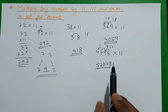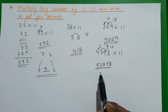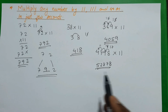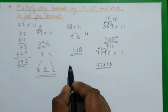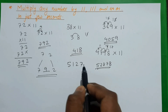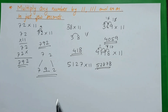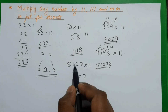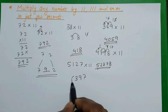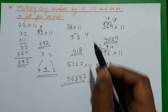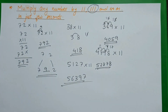We can even calculate this in our heads. For example, 5127 × 11: write 7, then 7 plus 2 is 9, then 2 plus 1 is 3, then 1 plus 5 is 6, then 5. So our product is 56397.